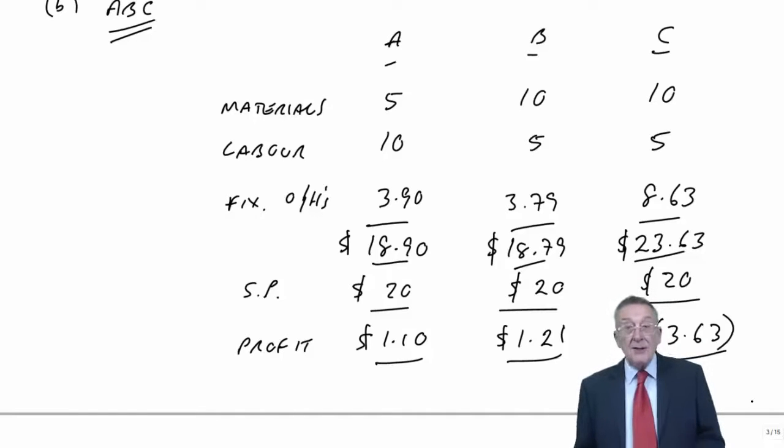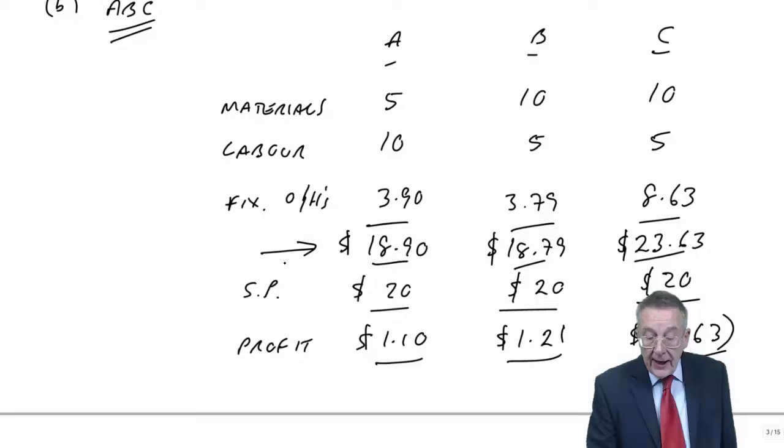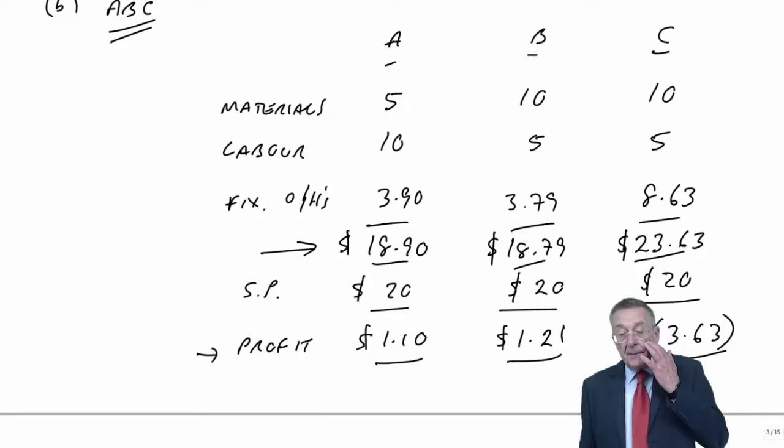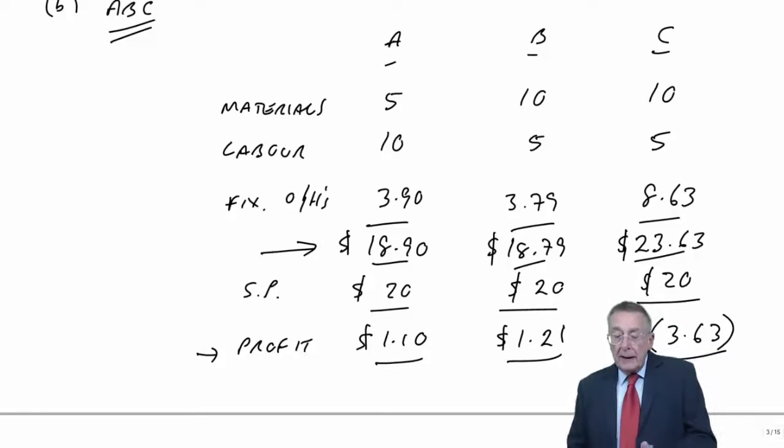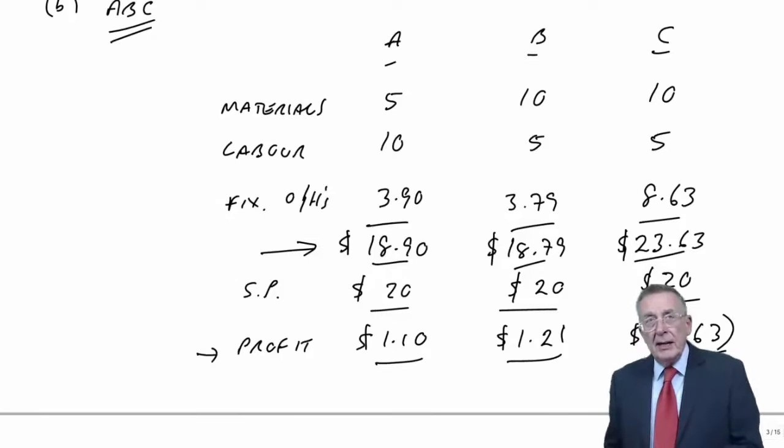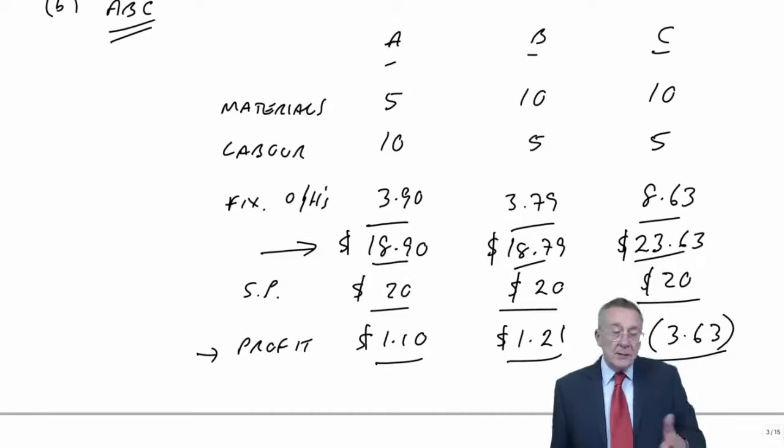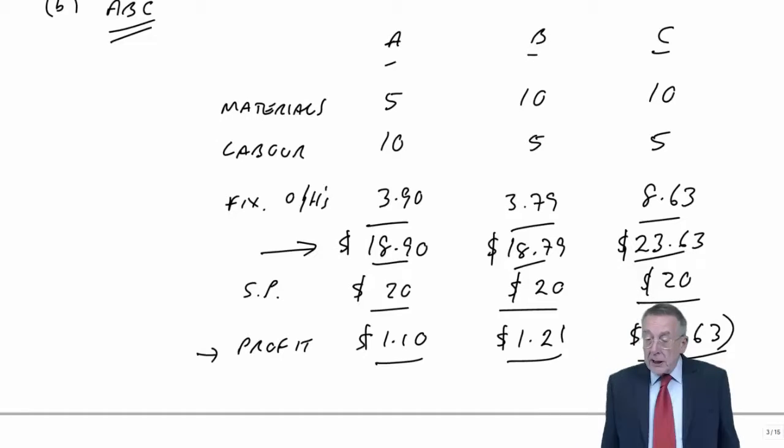I hope it makes sense using activity-based. There are the costs and profits we ended up with. Not always, but in this particular case using activity-based suggested that it was C that was the problem - C should have a higher price, whereas on traditional it was A. And I'm sure you would agree with me that activity-based is, without any doubt, a better approach.